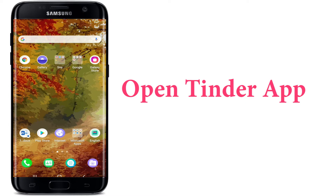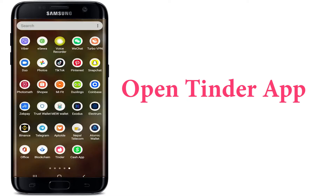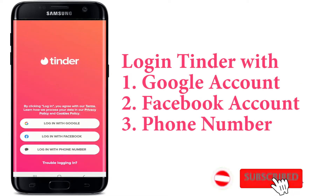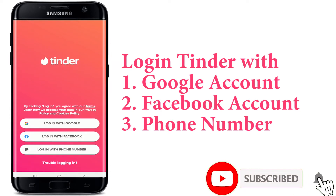In order to log into your Tinder, make sure you've signed up for a Tinder account first. Once you have, you can easily log in. Go ahead and open your Tinder application from your app drawer. You can log into Tinder with your Google, Facebook, or with your phone number.